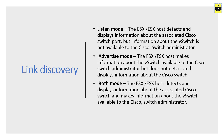Let's start with Link Discovery. Link Discovery is a feature that uses Cisco Discovery Protocol, CDP, to gather and send information about connected switch ports, which can be used for networking troubleshooting. There are different ways to grab physical or virtual switch information: listen mode, advertise mode, and both mode. In listen mode, the ESXi host detects and displays information about the associated Cisco switch port, but information about the vSwitch is not available to the Cisco switch administrator.